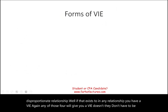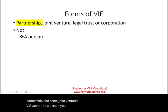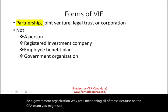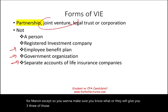What are the forms of VIE? Usually it's a partnership, joint venture, legal trust, or corporation. Enron relied heavily on partnerships and joint ventures. A VIE cannot be a person, a registered investment company, an employee benefit plan, or a government organization. On the CPA exam, you might see a question like 'all of the following are forms of VIEs except' — so make sure you know what is excluded.